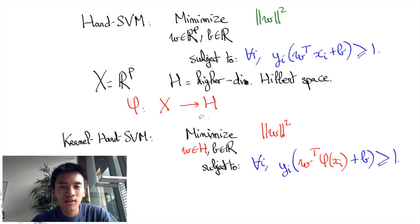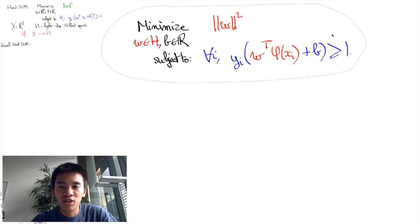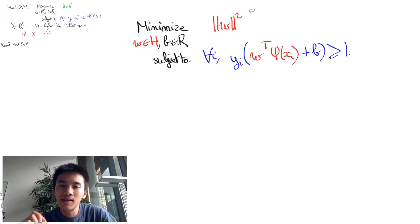So here for convenience I'm still using the transpose notation to denote the scalar product, but you should keep in mind that this kind of product occurs in the Hilbert space H, which might be potentially of infinite dimension. And if H is infinite dimensional, it seems a little bit presumptuous even to write down the kernel hard SVM program.